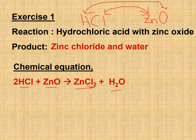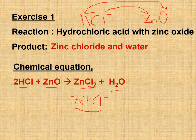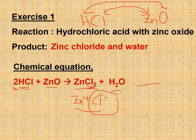Why is there a 2 in front of HCl? Because Zn is 2⁺ and chloride is 1⁻, so we need 2 Cl⁻ to form ZnCl₂. That's why we need 2 HCl to balance the equation. Remember, you can only change the stoichiometric coefficient in front — never change the formula itself.